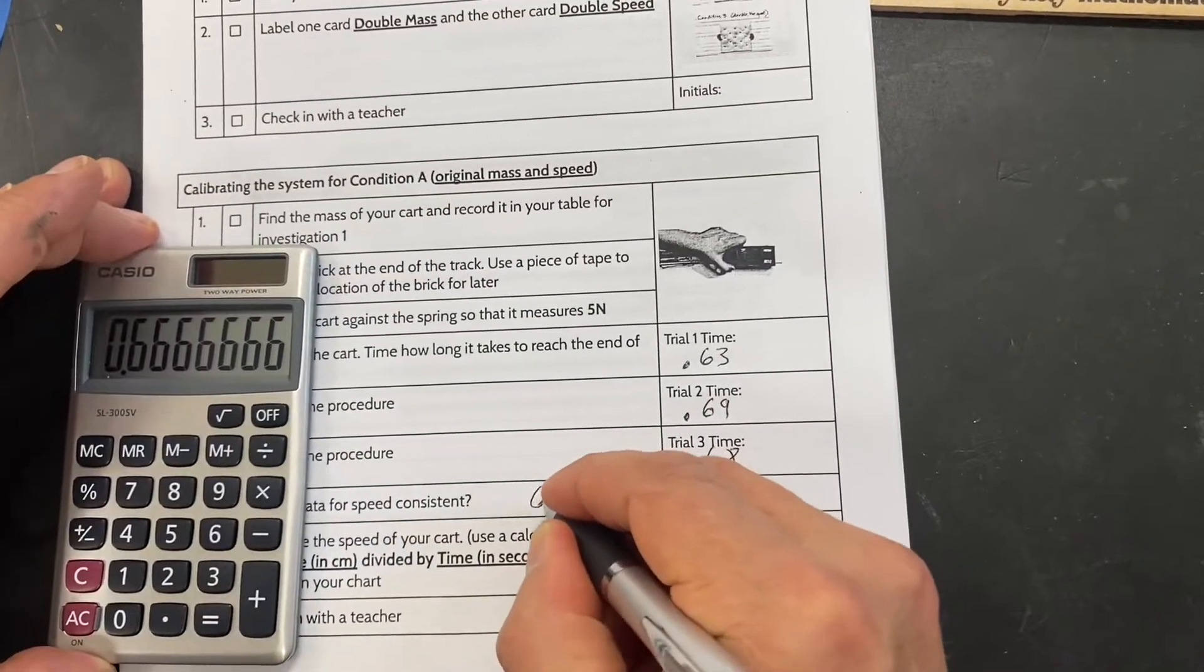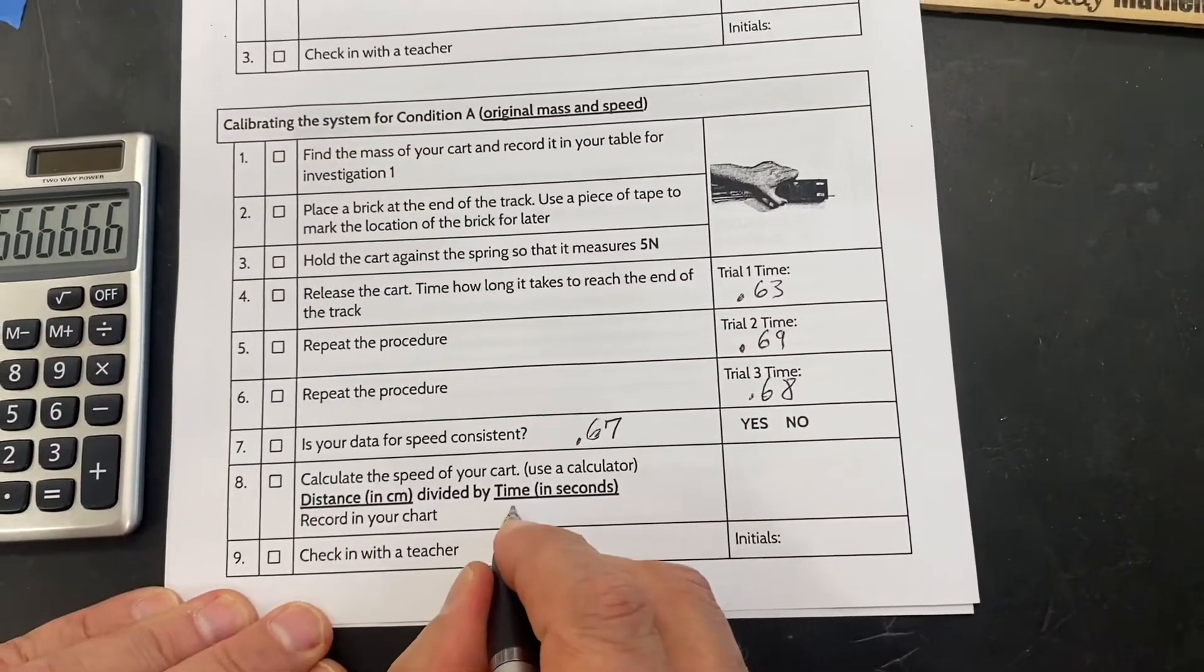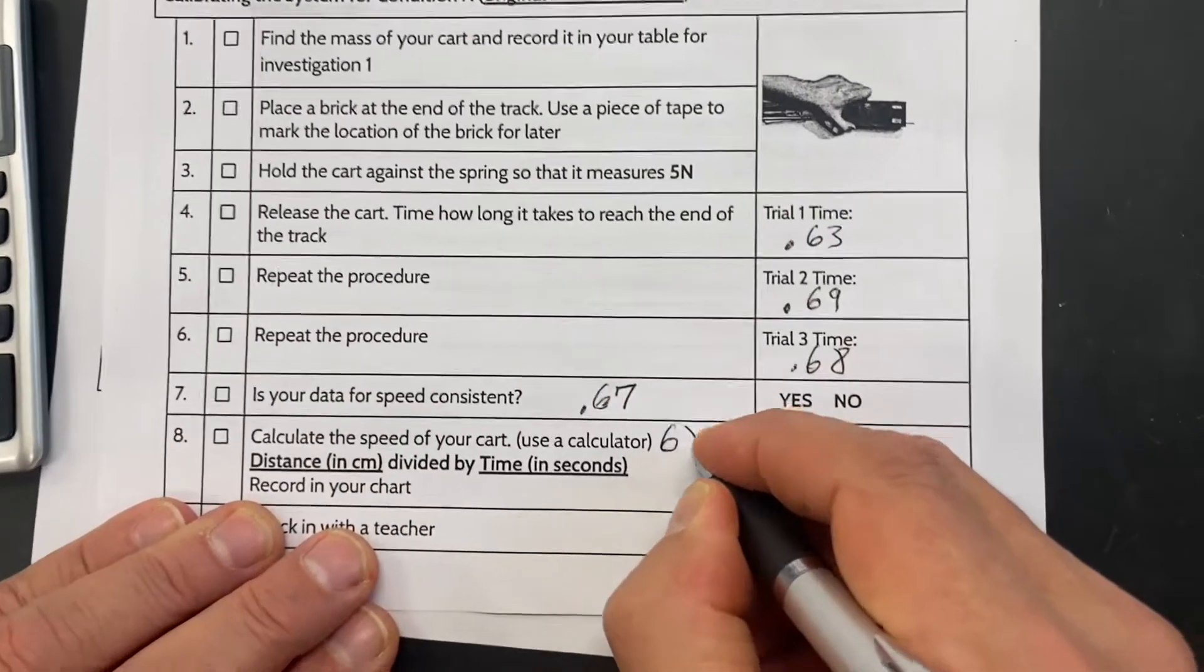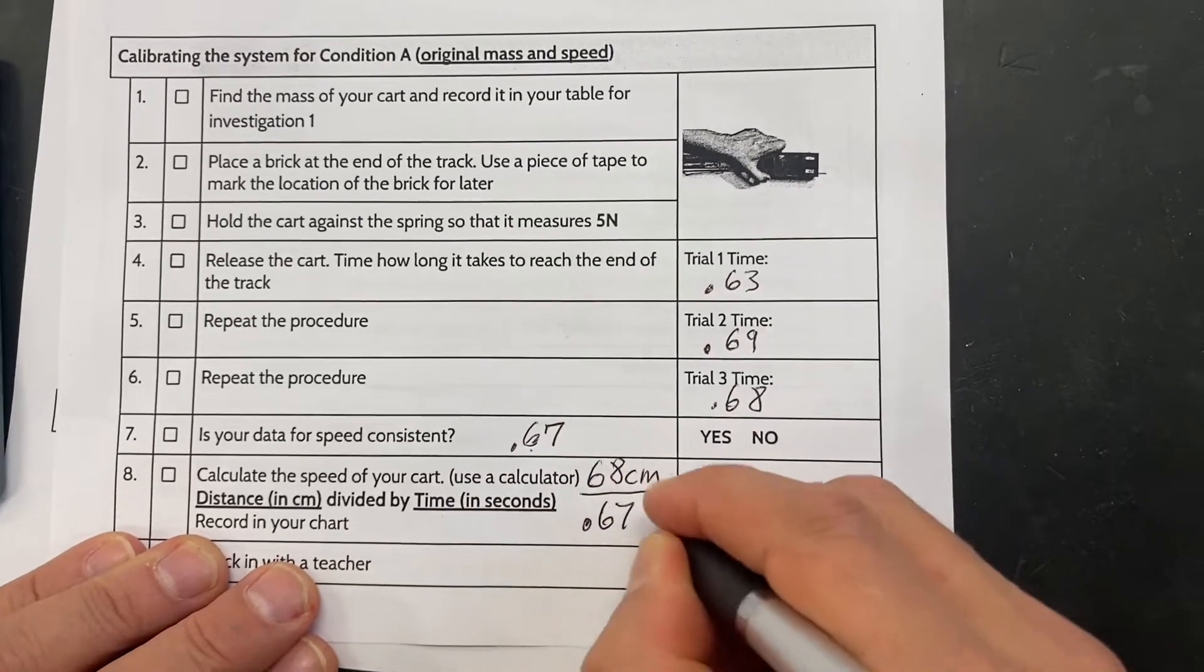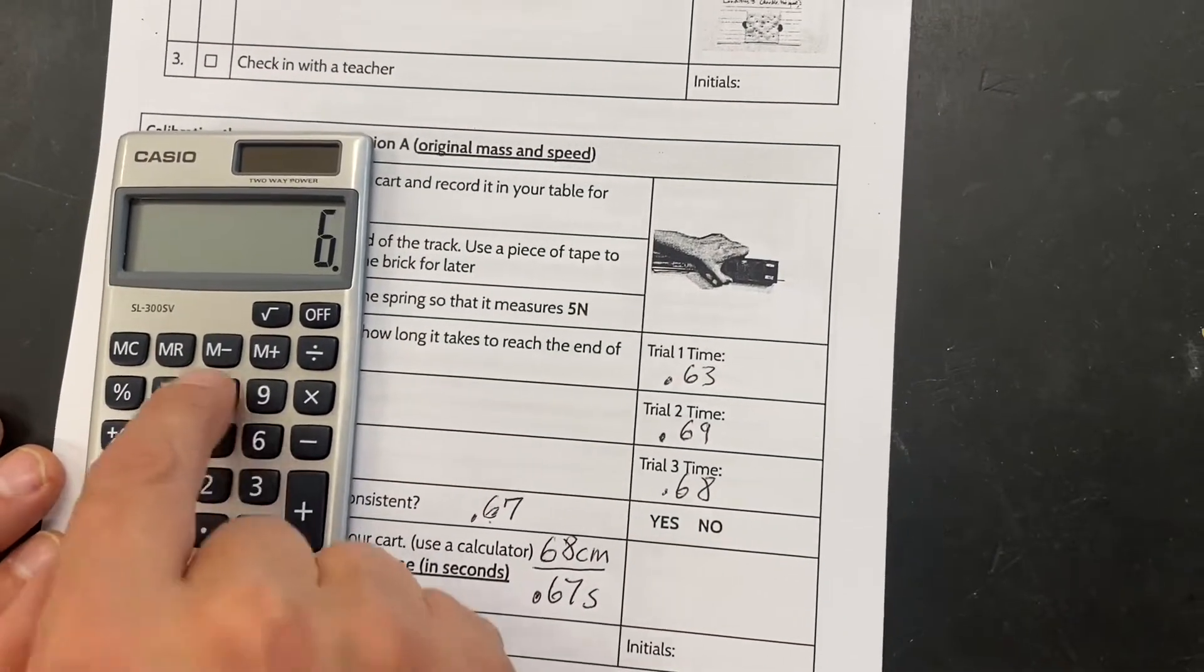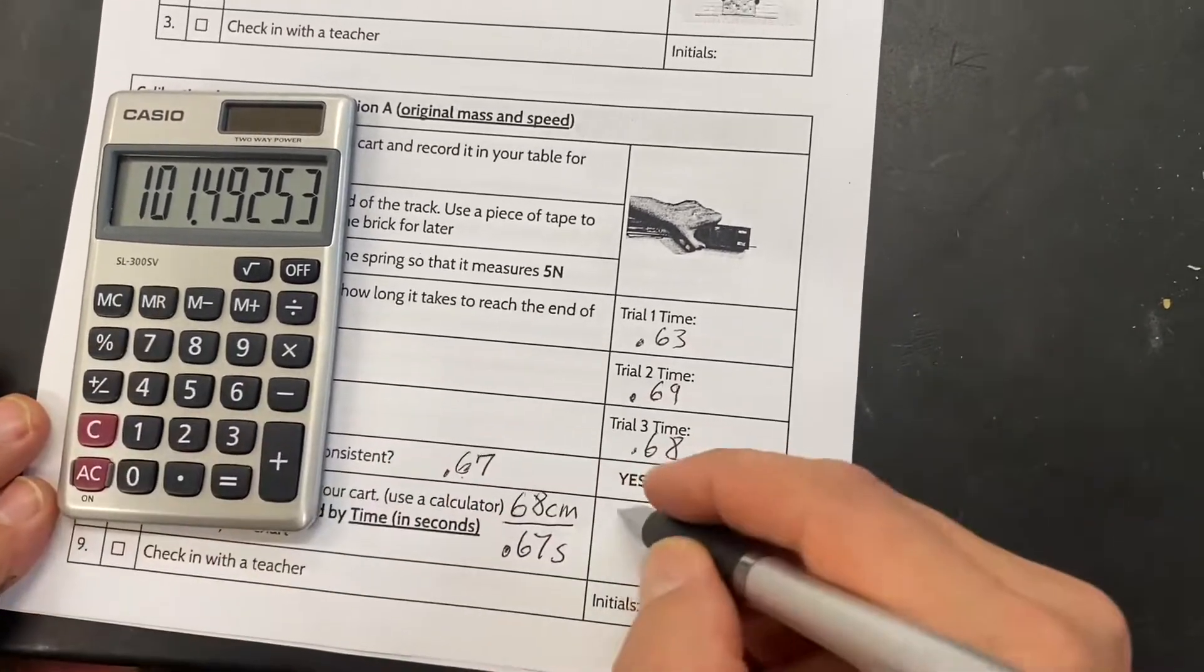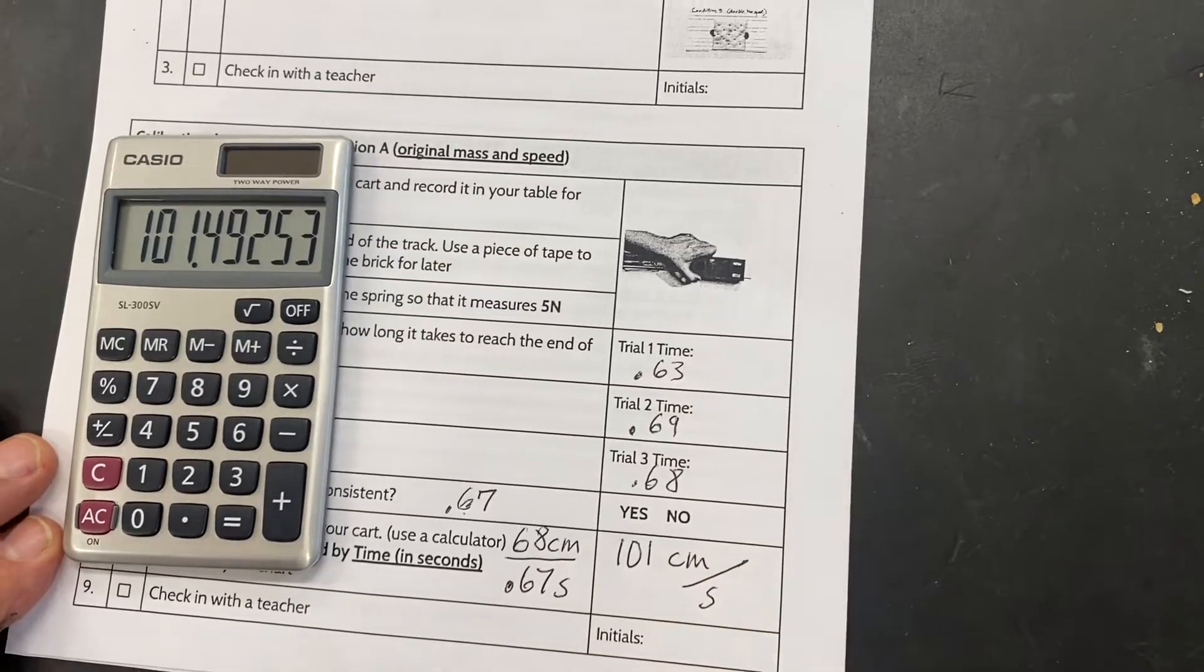So that is our average time it took to travel that distance. Now we're going to use our speed formula which is distance divided by time. And we have to remember that the length of the track was 68 centimeters, 100 minus 32. So we put that on the top, that's our distance 68 centimeters, and then we're going to put underneath that the average time which we established was 0.67 seconds. So it's going to be 68 divided by 0.67 gives us a speed of 101.49 which we'll round down to 101 centimeters per second.